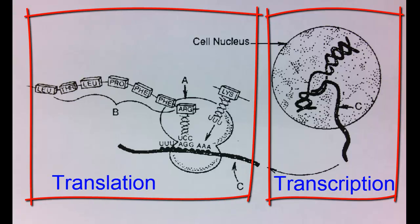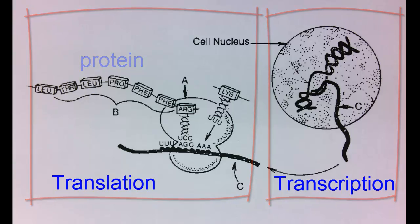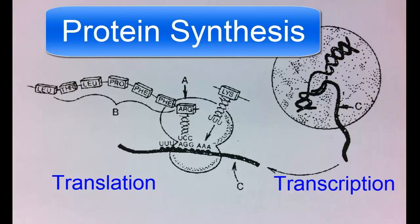At the ribosome, a specific amino acid sequence is translated from the information in the messenger RNA to make a specific protein. This is a basic introduction to protein synthesis.